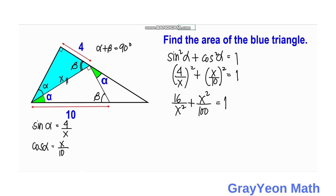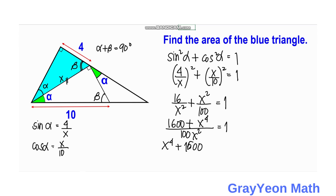We find the LCD, which is 100x². Multiplying through: 100x² divided by x² times 16 gives 1600, plus 100x² divided by 100 gives x⁴, all equal to 100x². Cross-multiplying gives x⁴ plus 1600 equals 100x². Transposing 100x² to the left-hand side, we have x⁴ minus 100x² plus 1600 equals 0.